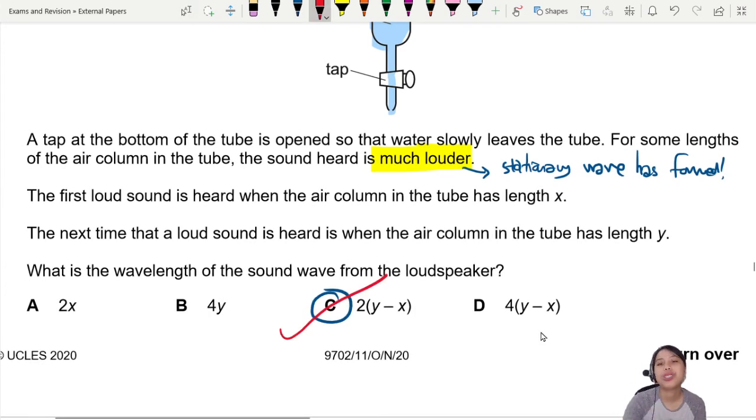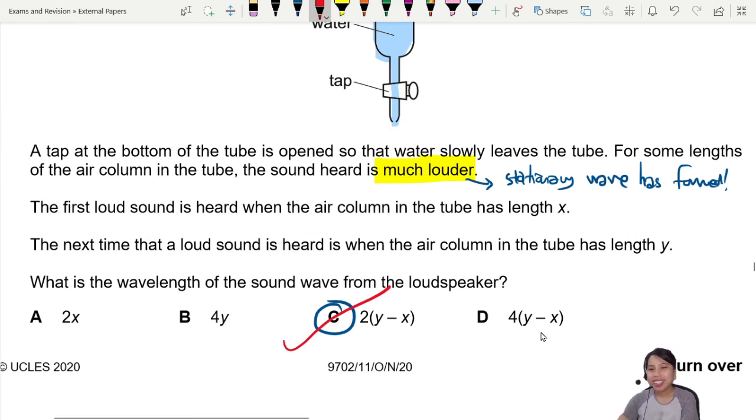That is the best choice for this question. Hope that's helpful in helping you understand how to do this air column stationary wave where the length of the column is changing, very much like some musical instruments. That's all for this video, I will see you in the next one.